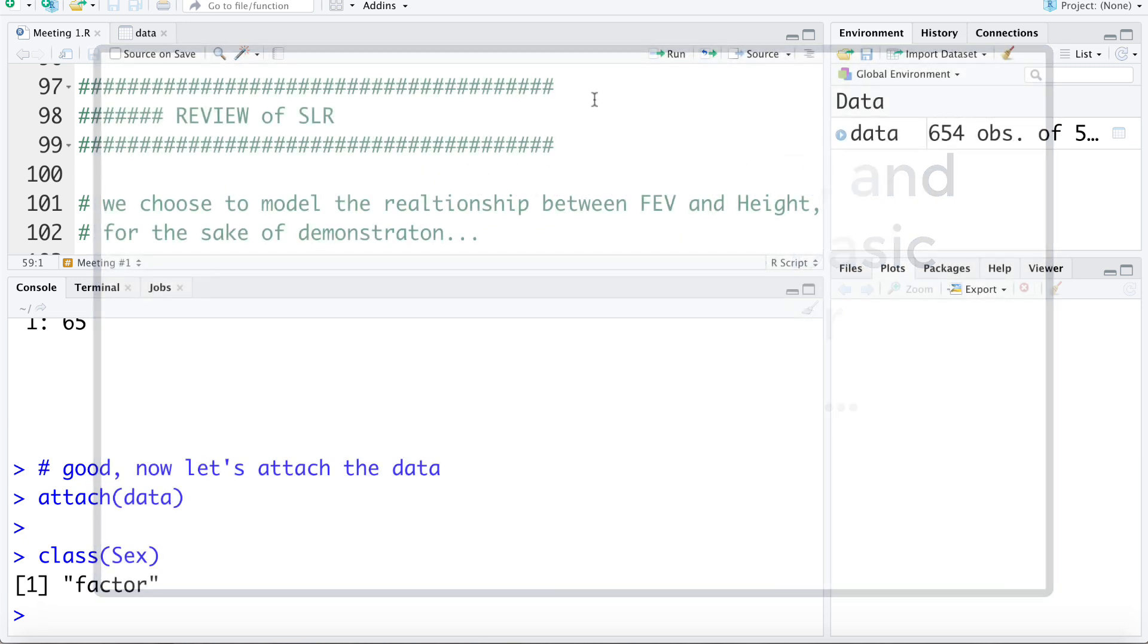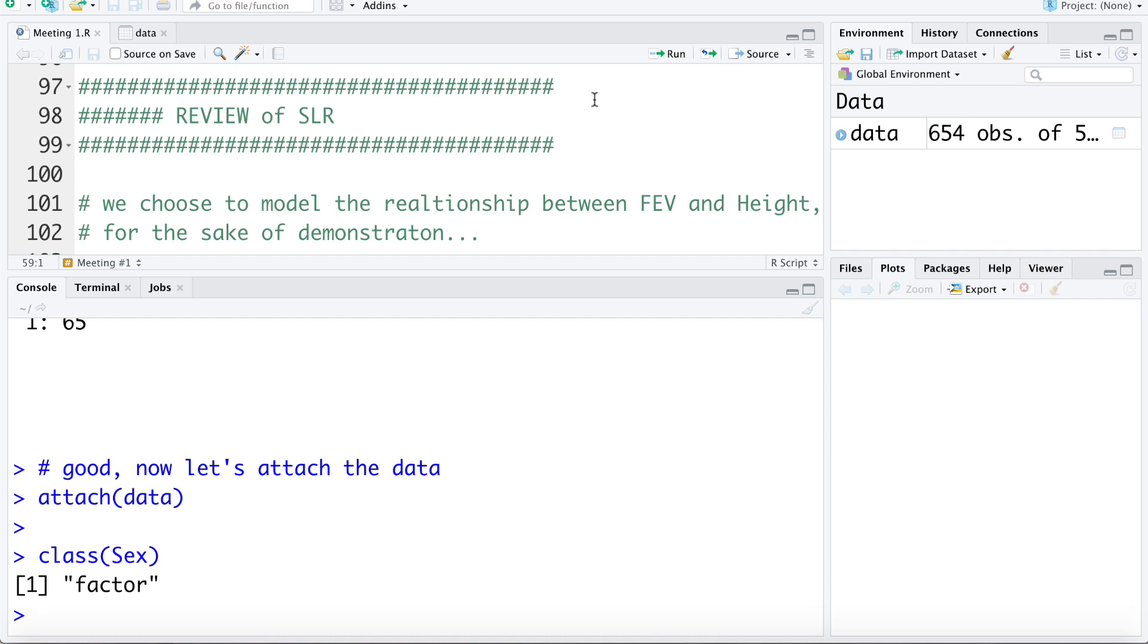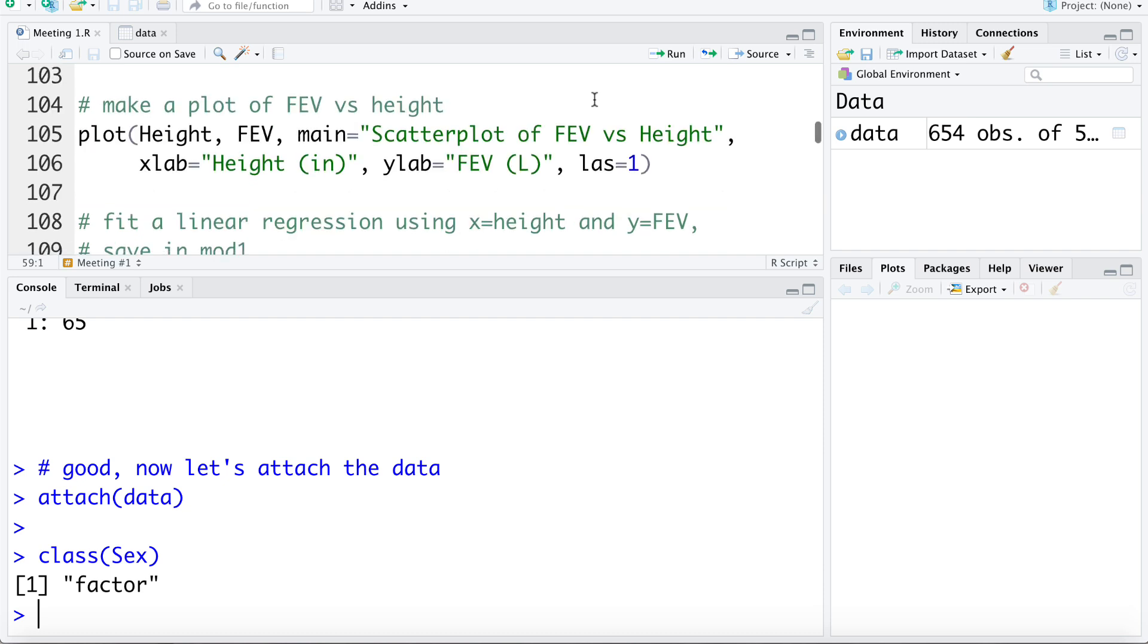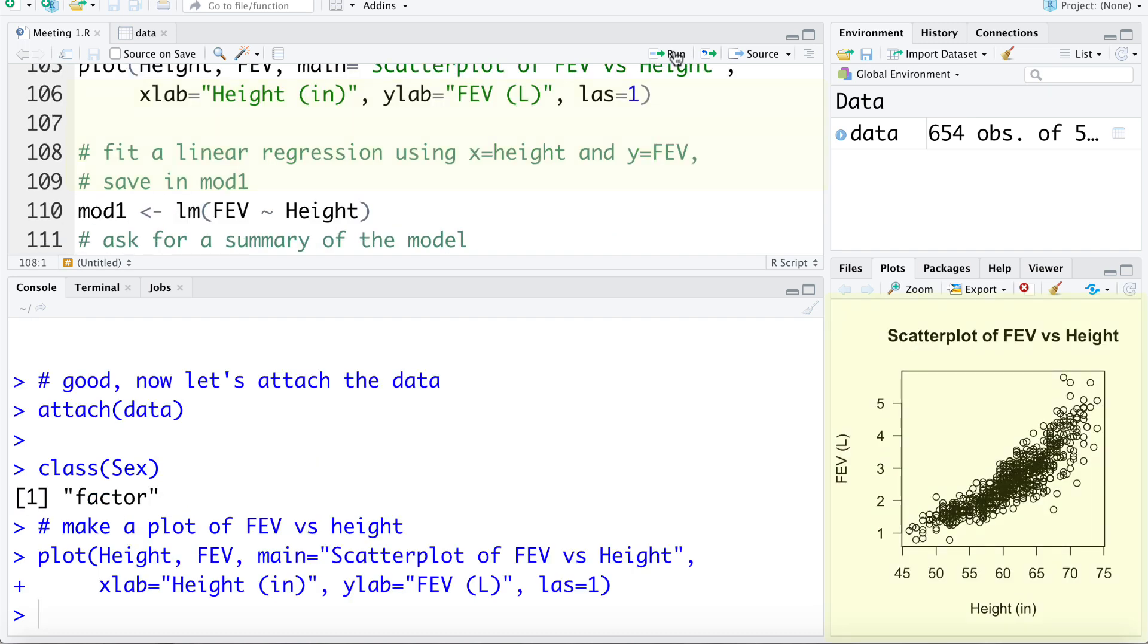To do so, we're going to model the relationship between a Y variable or outcome of FEV, this is a measure of lung capacity, and an X variable or explanatory variable of height. So first let's make a plot of FEV versus height. Here's the data that we want to fit a linear regression model to. So let's go ahead and do that.